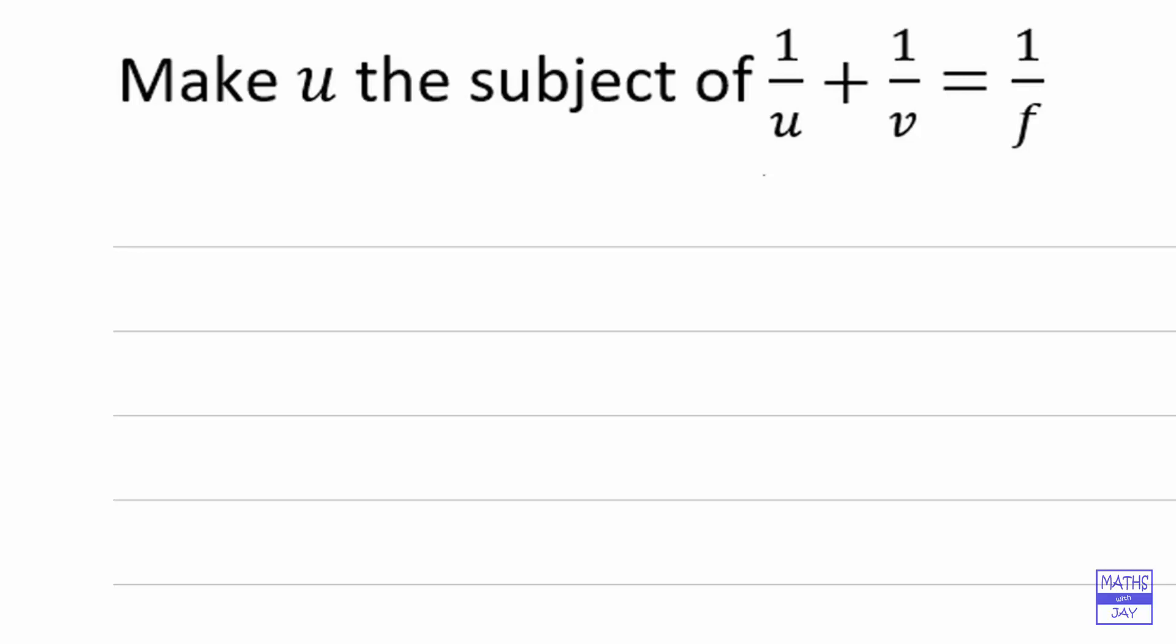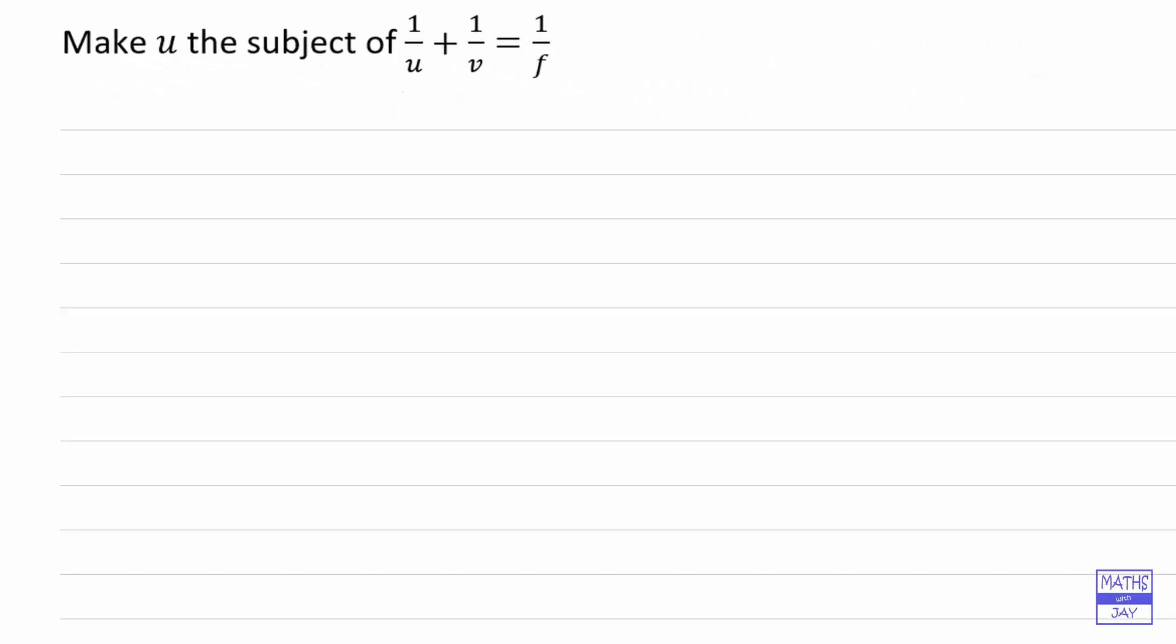Before we look at this, let's have a look at a numerical example to show you what you can't do. If we look at a simple example where we're adding one twelfth and one quarter together, well a quarter is three twelfths, so that would be four twelfths, which is one third.